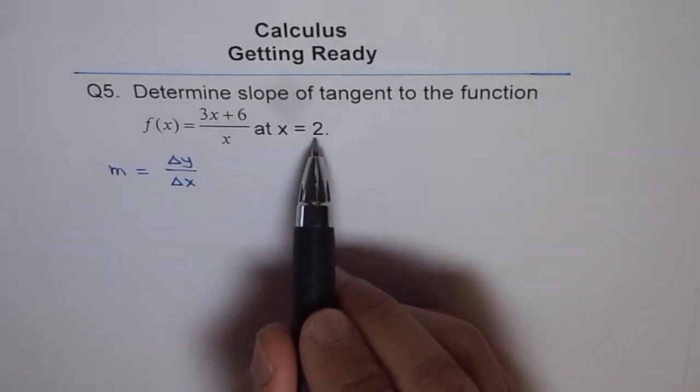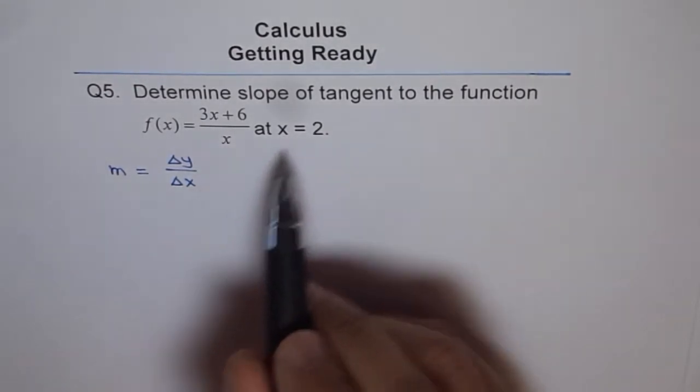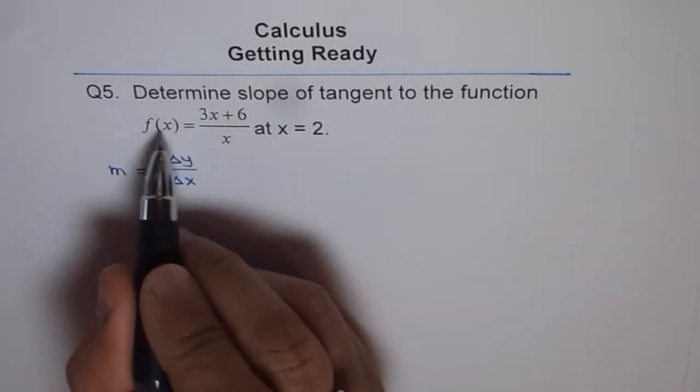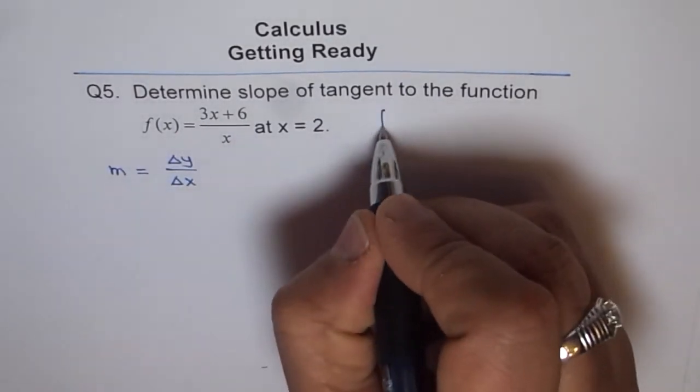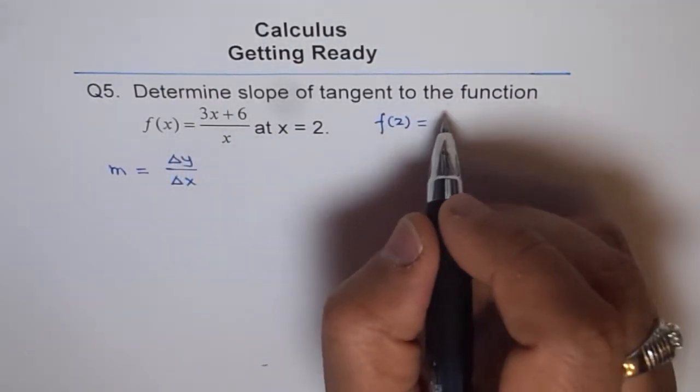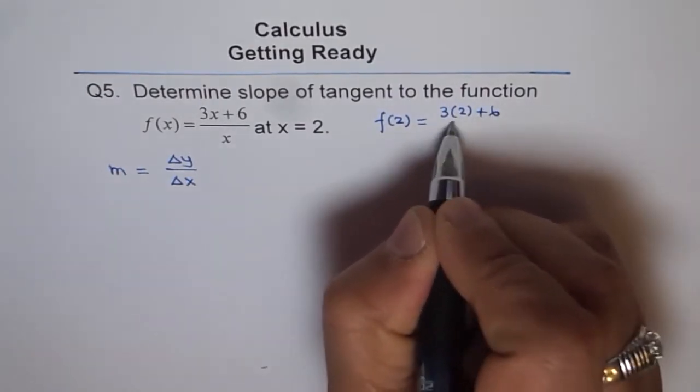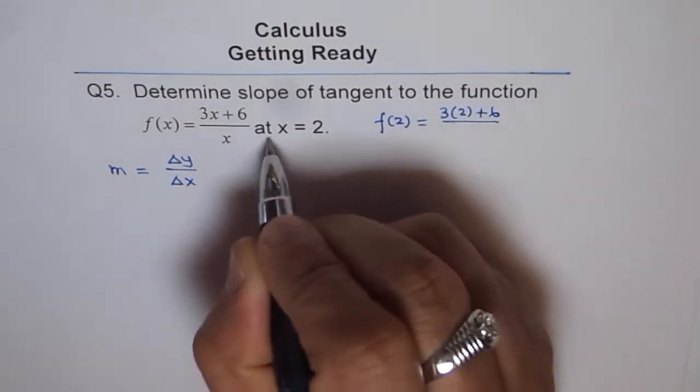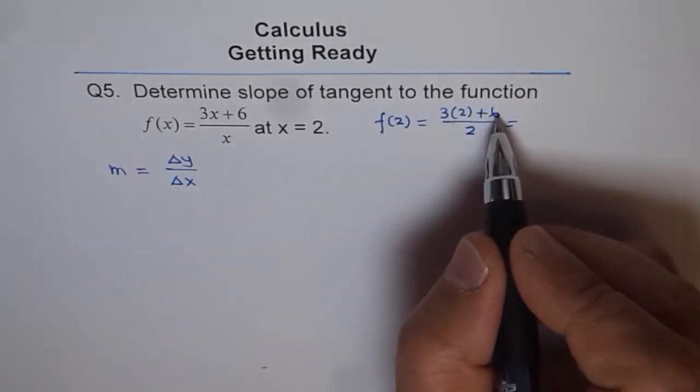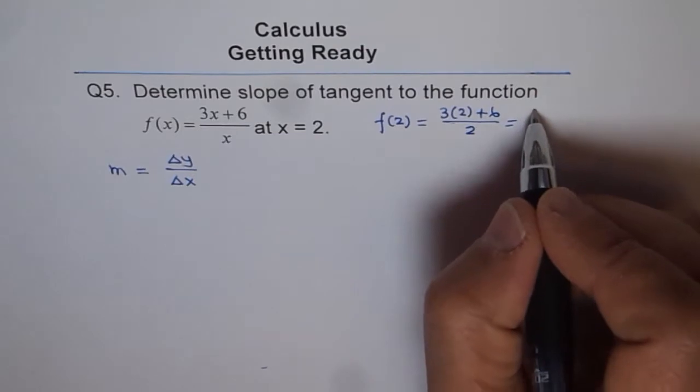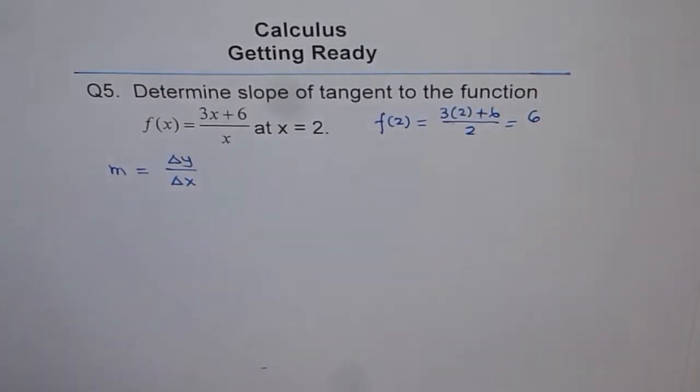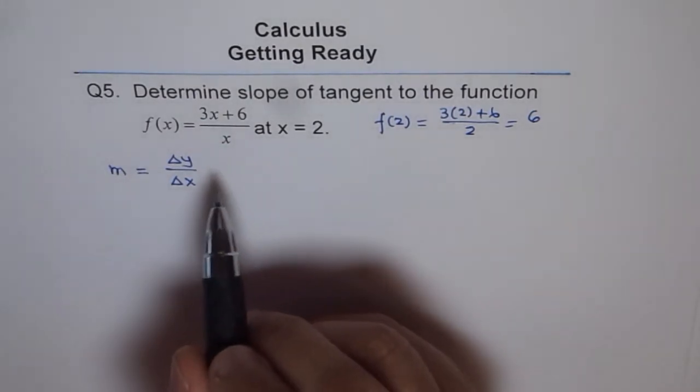We are given the x value but not the y value. So we should also find what y value is. Y value will be f(2). Let's write f(2) equals 3(2) + 6 over 2. 3 times 2 is 6, 6 plus 6 is 12, 12 divided by 2 gives us 6, therefore f(2) is 6.